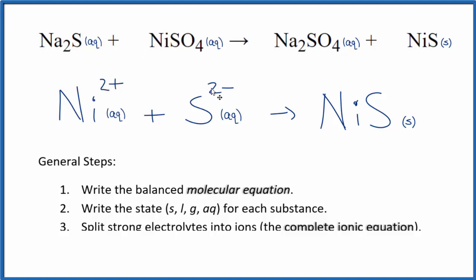You'll note charge is balanced. We have a 2 plus and 2 minus, so this gives us a net charge of zero. Over here, neutral compound, net charge of zero. And if you count the atoms up, they're balanced as well.